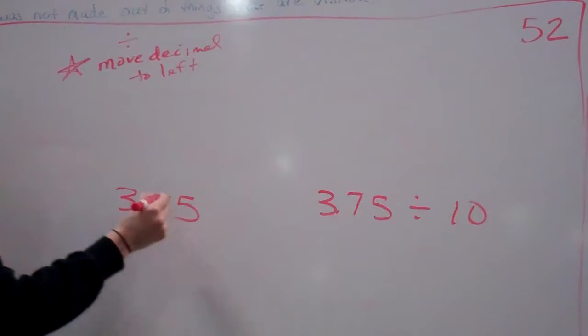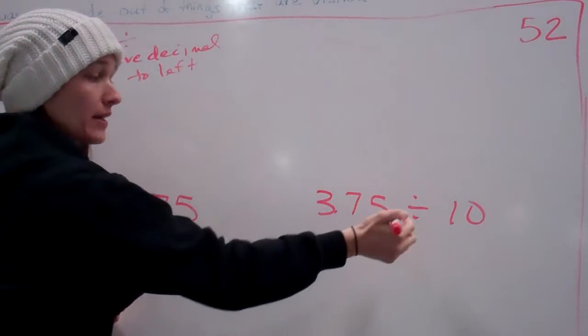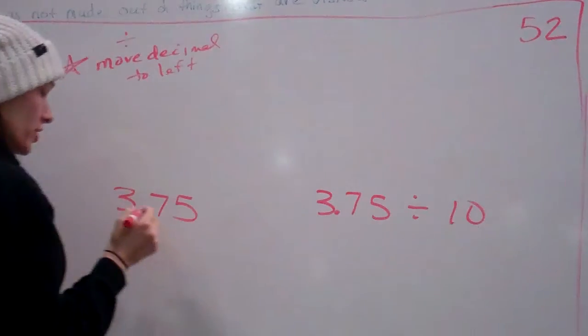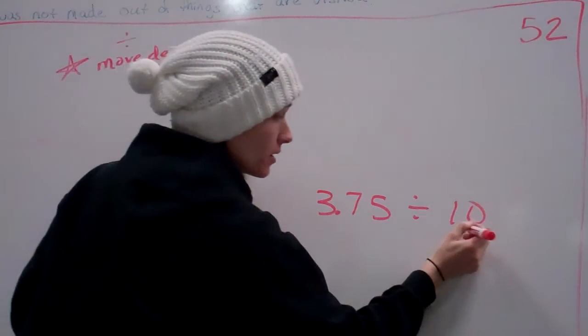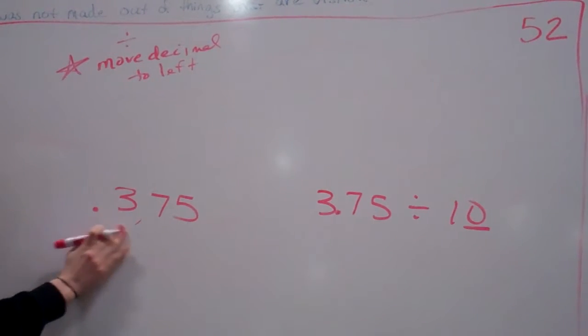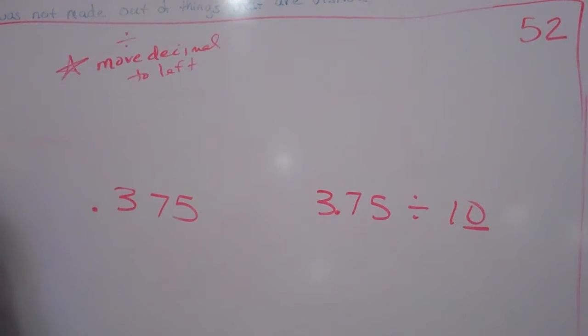Okay, so right now it's 3.75, and because we're dividing, that means we're going to move the decimal to the left one spot, because there was one zero. So my final answer would be point three seven five. Pretty simple. That's the lesson.